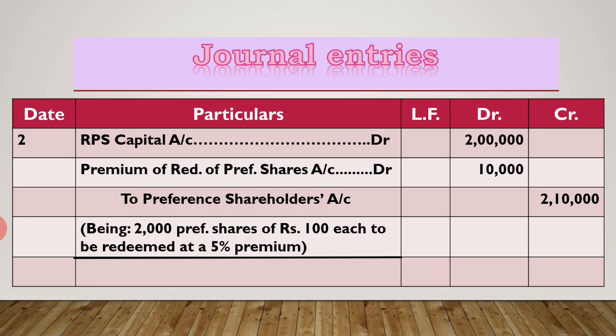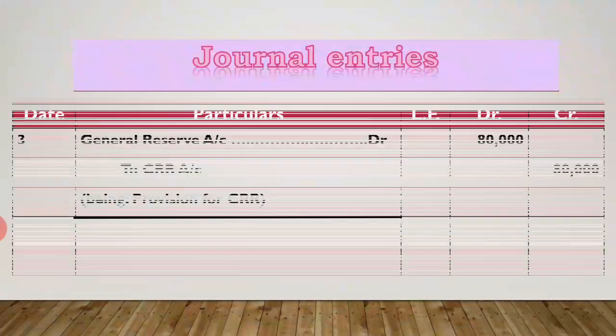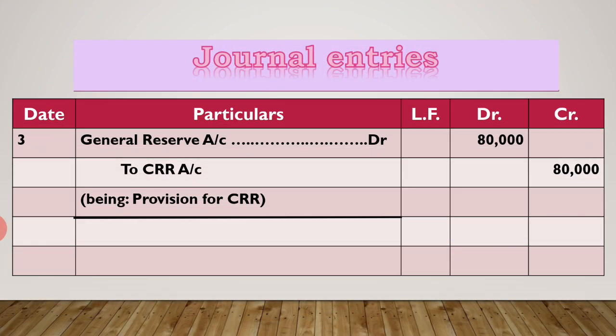Entry number 3: general reserve account debit to CRR account. We have a general reserve of 80,000, so we transfer the general reserve to CRR.